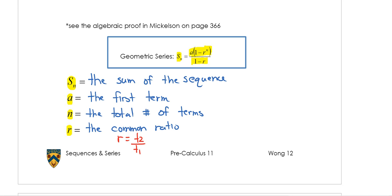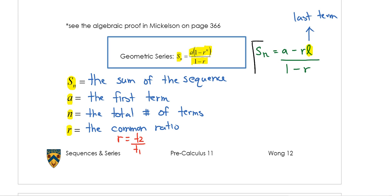There's also another formula useful for finding the sum of the sequence. This second formula is Sn equals A minus R times L, divided by 1 minus R. The only difference with this formula is that if you're given the last term L in your sequence, you can use this formula to find the total sum. If you're not given the last term, use the first formula.